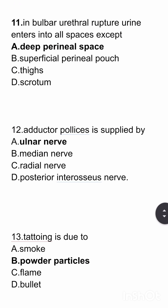Adductor pollicis is supplied by ulnar nerve, median nerve, radial nerve, or posterior interosseous nerve? Here the answer is ulnar nerve.